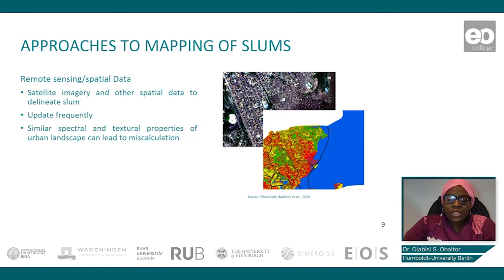Furthermore, satellite imagery can help to identify some of the drivers of slum development. It can also help provide information on the spatial distribution and heterogeneity of slums, which cannot be obtained from traditional data collection methods such as sensor data. With all these advantages, it also has some limitations, such as difficulties in differentiating between the spectral and textural properties of urban landscapes, which can lead to misrepresentation of slums.